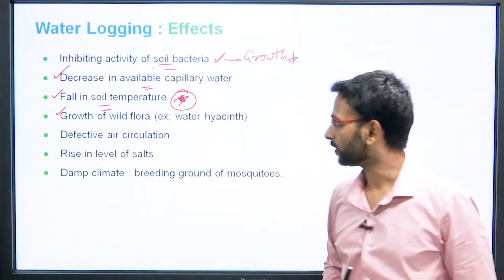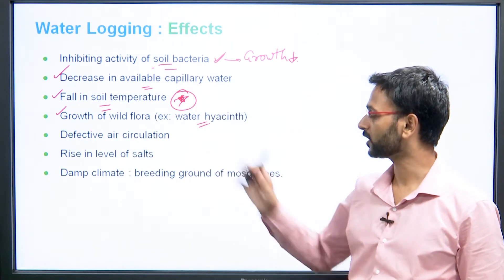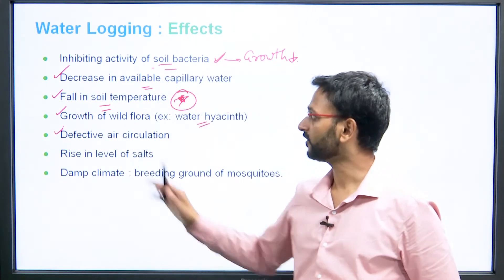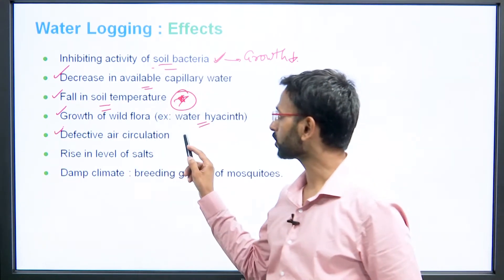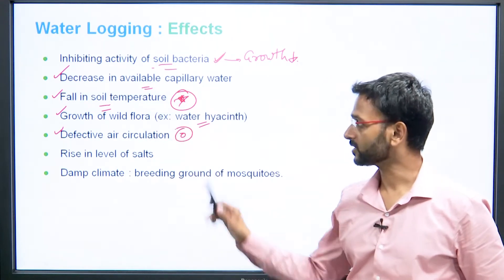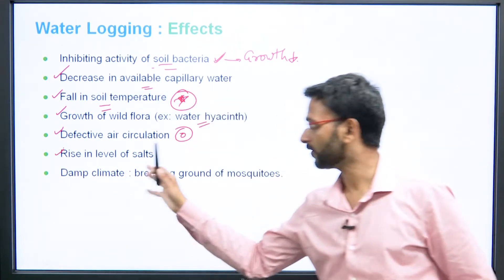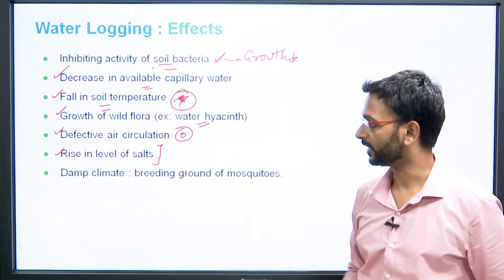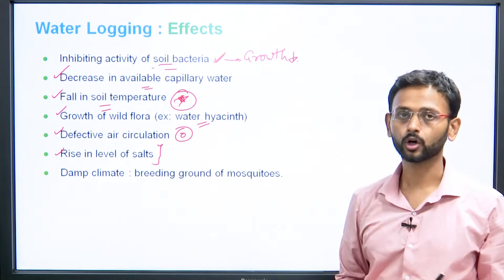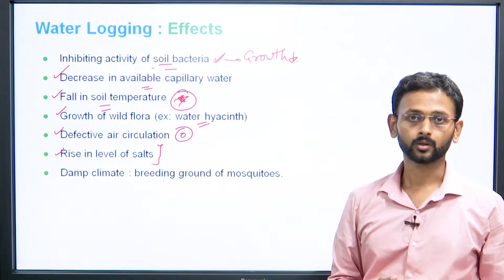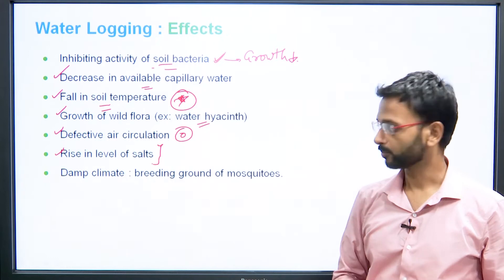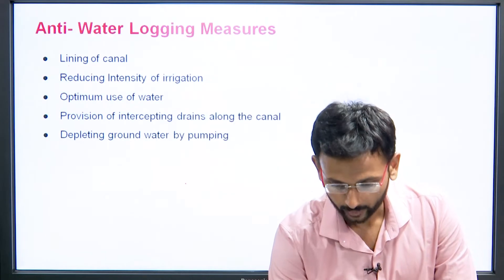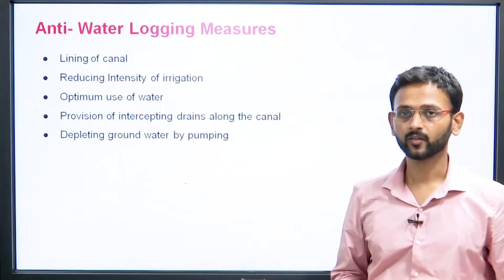Fourth effect is growth of wild flora such as water hyacinth, known as jal kumbhi. Fifth is defective air circulation due to damp and moist climate. Sixth is a rise in the level of salt in the surrounding area. Seventh is a damp climate, which is a breeding ground for mosquitoes, leading to malaria, chikungunya, and other diseases.